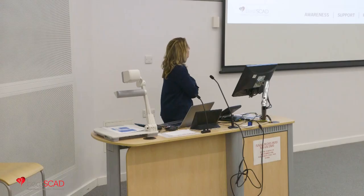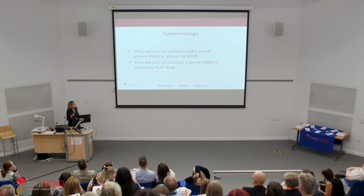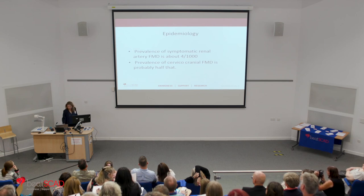How common is FMD? Data from registries suggest that the prevalence of symptomatic renal FMD — in patients who've had symptoms mainly as high blood pressure — is around 4 out of 1,000. The prevalence of cervical cranial FMD, affecting the arteries from the neck heading to the brain, is about half of that, in people presenting with symptoms such as stroke at a young age or headaches. Clearly there is a huge volume of patients who will be asymptomatic.